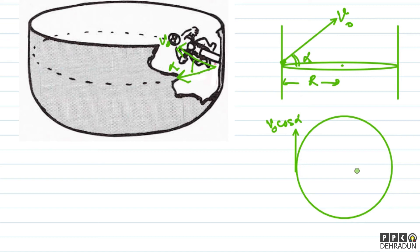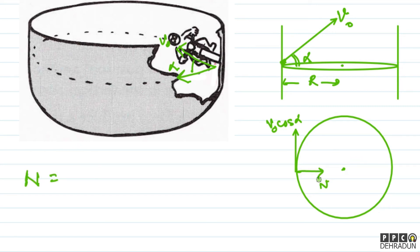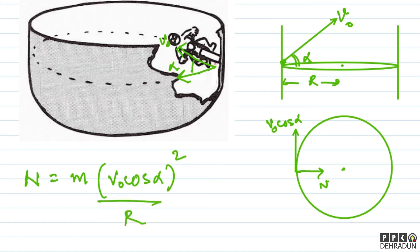Now, if you look at this radius — it is the radius of the horizontal circle. So, the normal reaction is the required centripetal force. तो हम लोग इसको किसके बराबर कर देंगे: m times (V0 cos alpha)² upon R, यानी m V0² cos²α / R है ना।